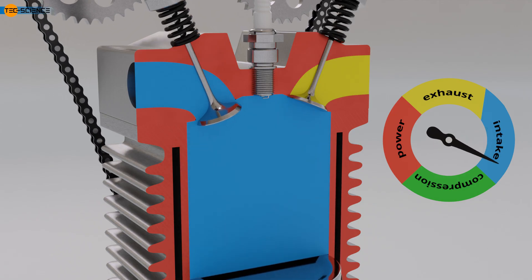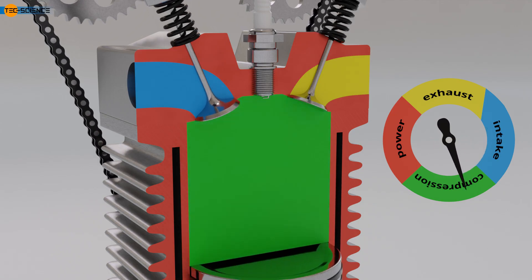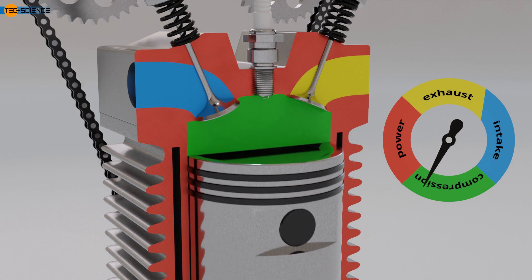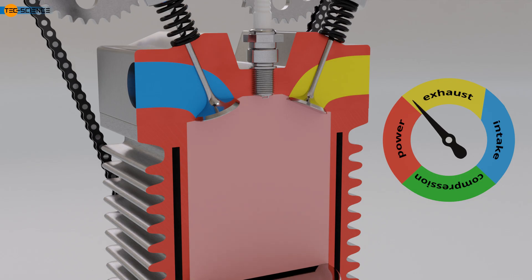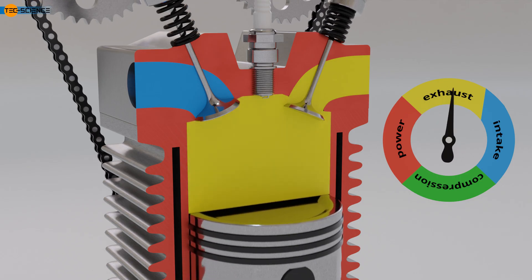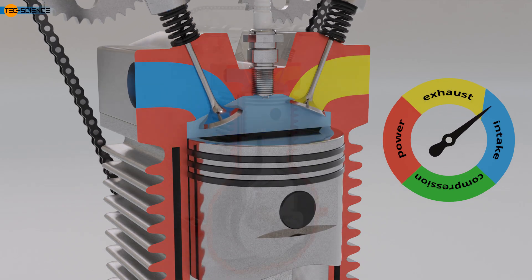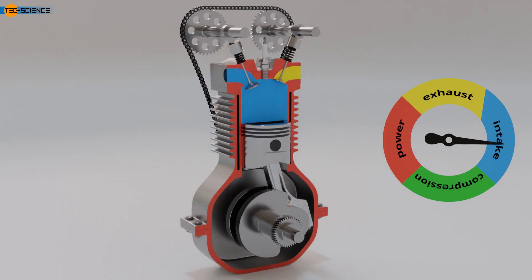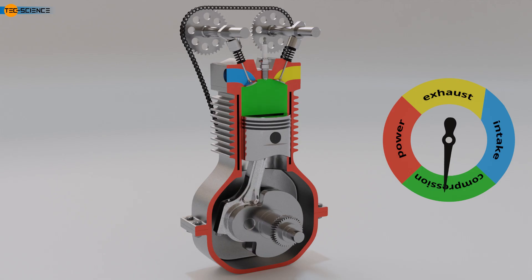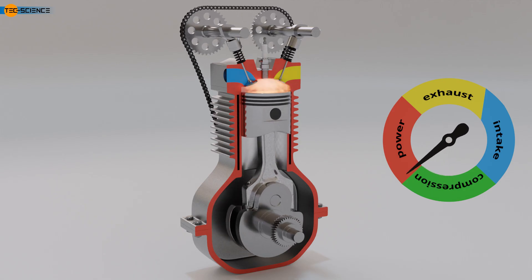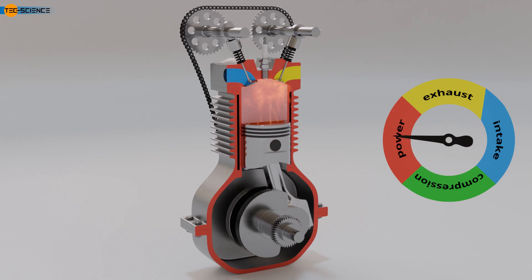Note that, unlike shown in the animation, a cylinder can generally have multiple intake and exhaust valves. This increases the flow cross-section overall and keeps flow losses to a minimum. This improves the so-called volumetric efficiency, which describes the ratio of the actual fresh charge present in a combustion chamber to the theoretically maximum possible charge amount. The term charge generally refers to the gas mixture contained within the cylinder.